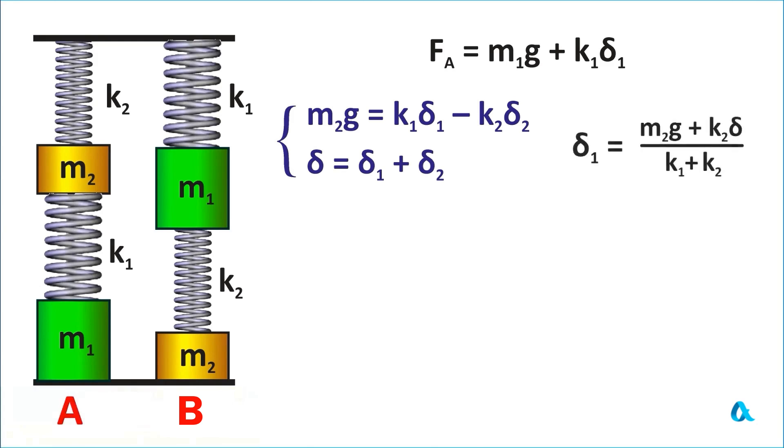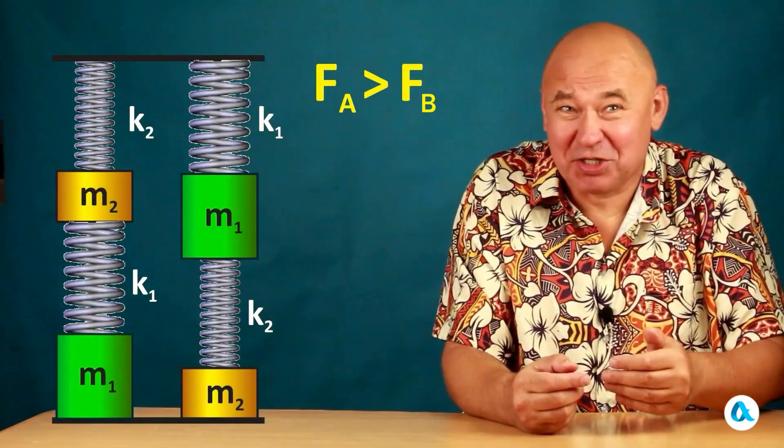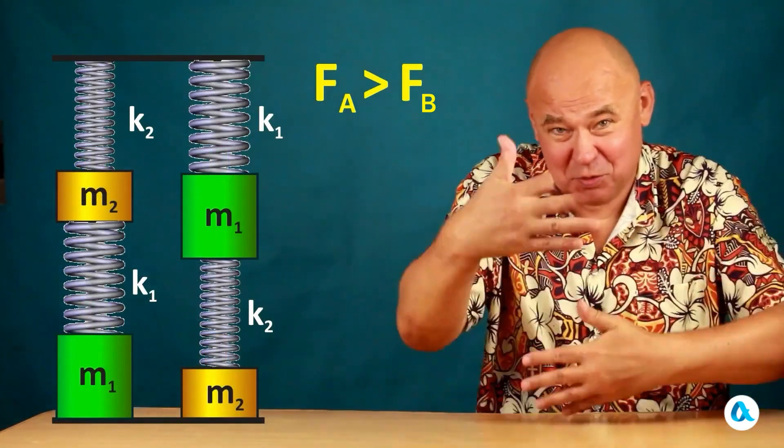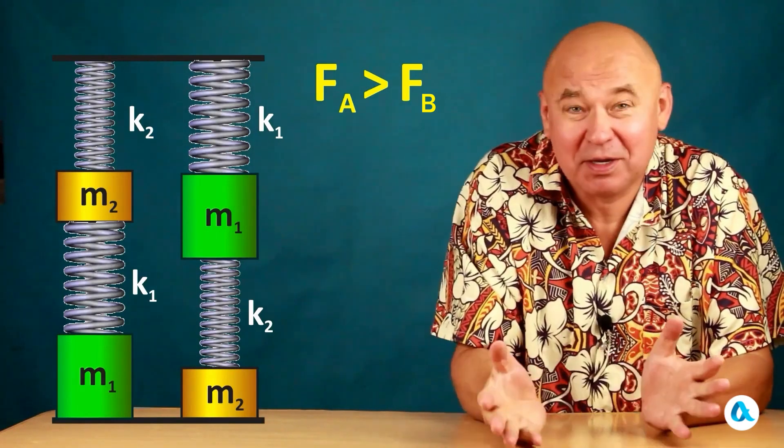We substitute its expression for the force and obtain the following expression. For situation B, the first two terms will remain the same and only the third term highlighted in red will change. And since k2m2 is less than k1m1, it follows that the force FA is greater than the force FB. And so it turns out that by swapping the weights and springs, the load on the base changes.